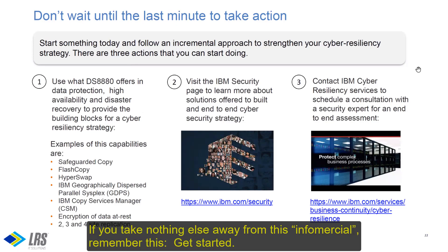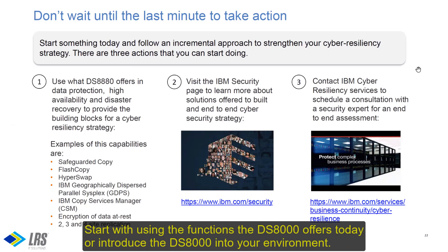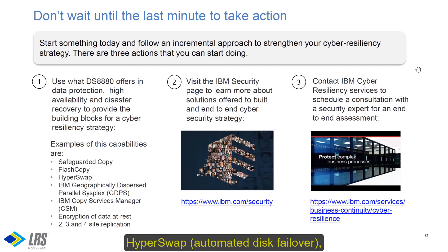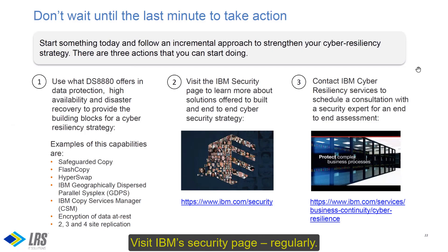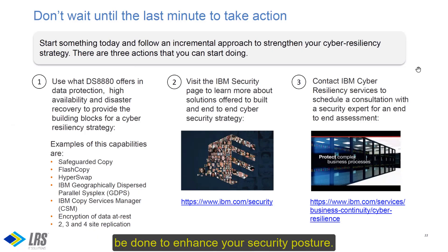If you take nothing else away from this video, remember this: get started. Anything you do now will make your recovery efforts easier down the road. Start with exercising the functions the DS8000 offers today, or introduce the DS8000 into your environment. These functions include data at rest encryption, 2-, 3-, or 4-site recovery in both high availability and disaster recovery modes, support of Hyperswap which provides for automated disk failure, and GDPS which provides for automated site failover. Secondly, visit IBM's security page regularly. And finally, engage IBM's cyber resiliency services for an assessment of your environment and what steps can be taken to enhance your security posture.